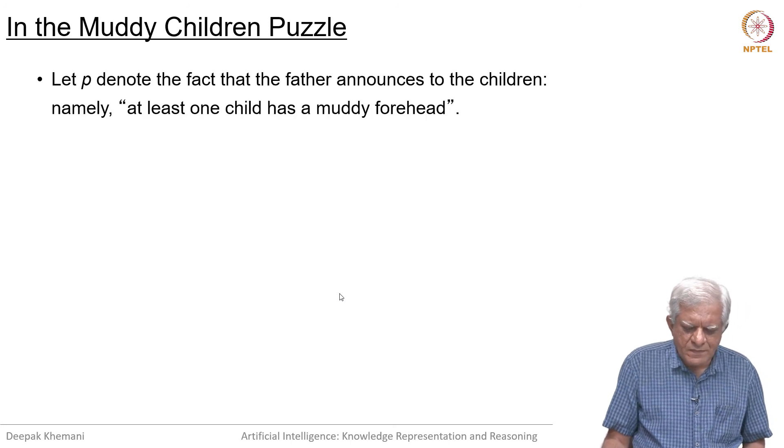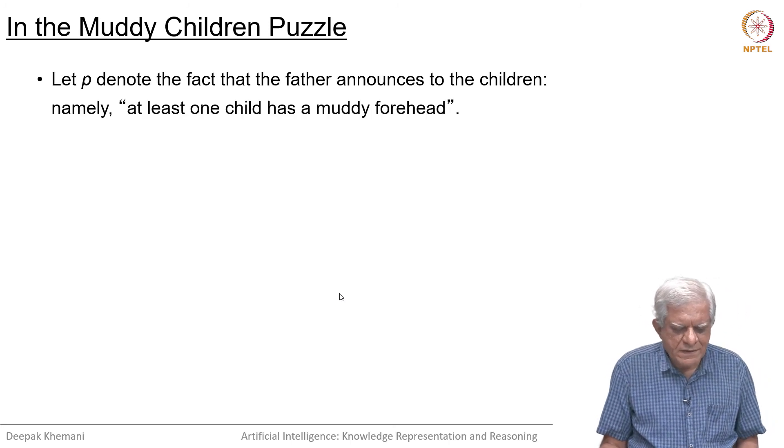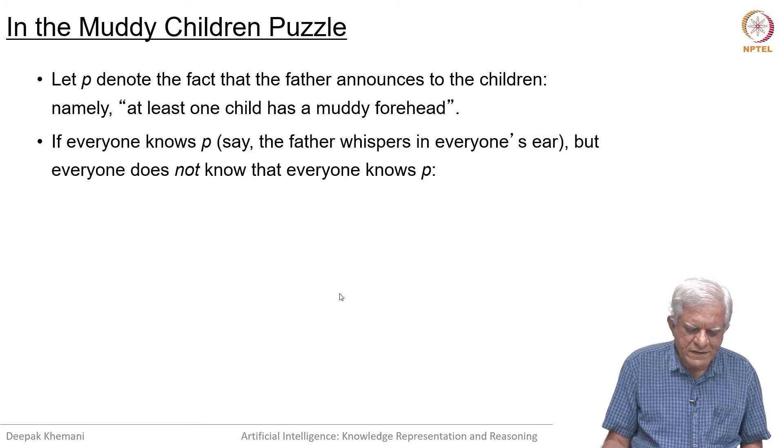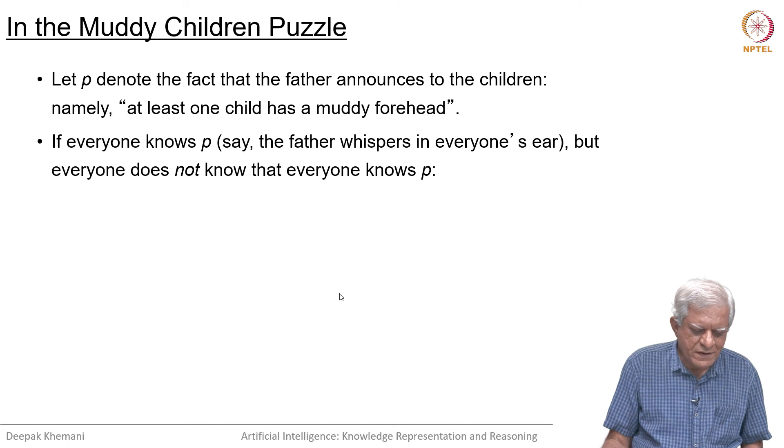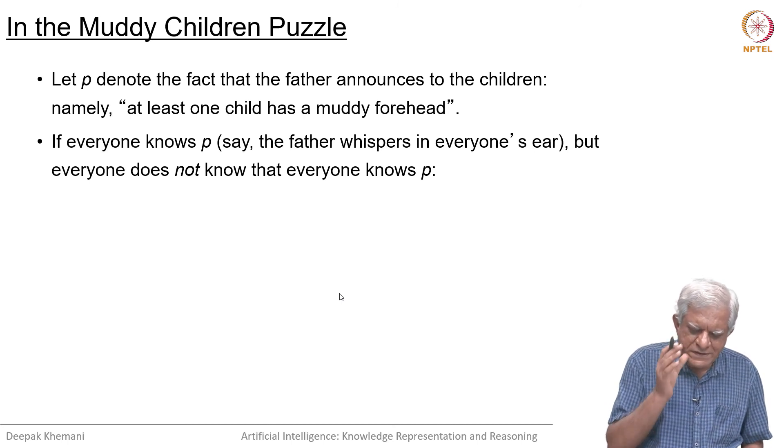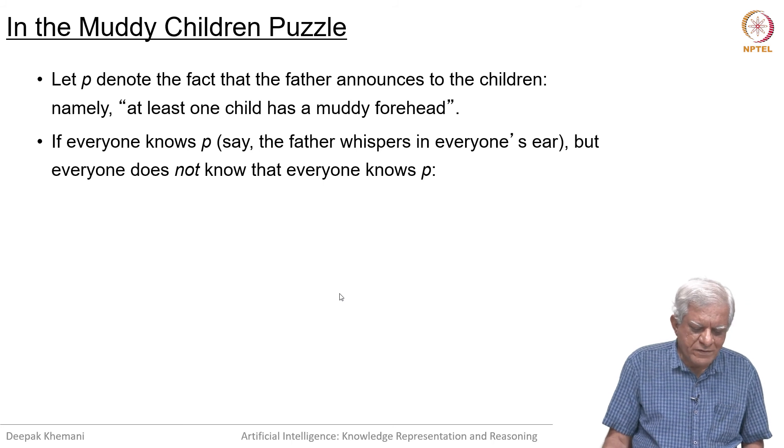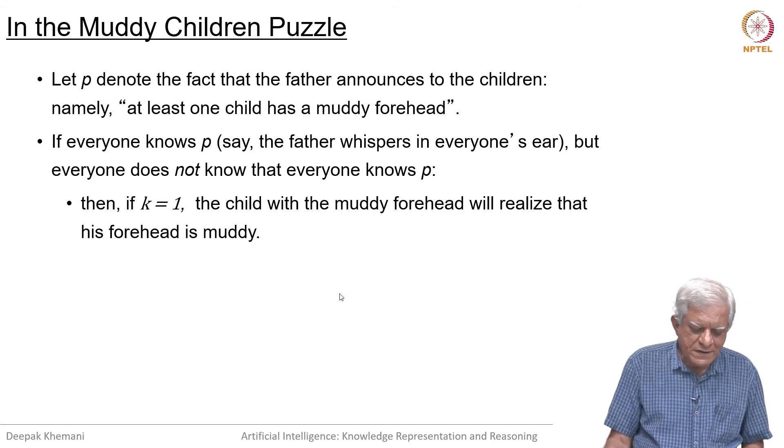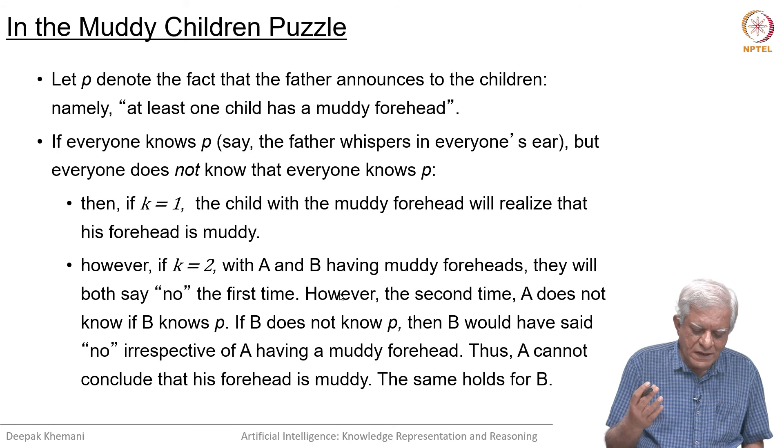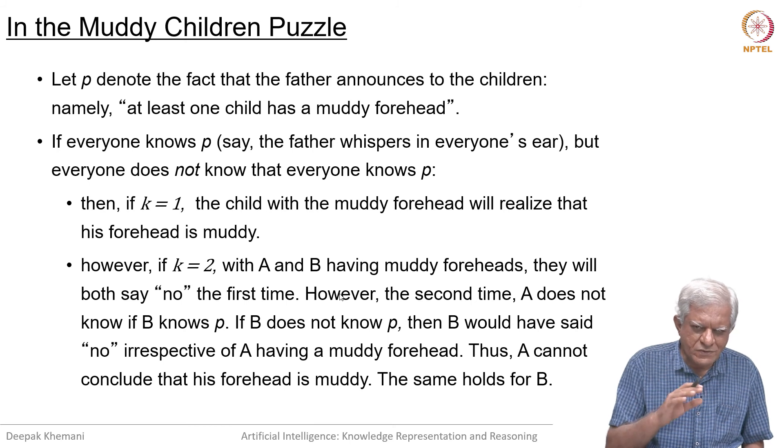Let me denote the fact that father announces to the children that at least one child has a muddy forehead. If everyone knows P, say the father whispers in everyone's head, but everyone does not know that everyone knows P, then if k equals 1, the child with the muddy forehead will realize that he has muddy forehead. But for k equals 2 or larger, this would not be possible, and you should think over this and see that mutual knowledge would not be enough.